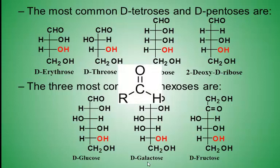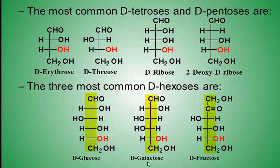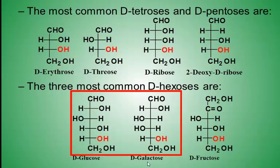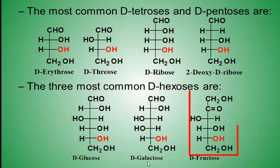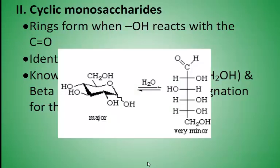I encourage you to draw the Lewis structure for that top group to verify that it is an aldehyde. The bottom three are hexoses, or six-carbon monosaccharides. The first two of the bottom three are aldoses and the third one is a ketose. Monosaccharides are an equilibrium between their straight chain form and a cyclic form — they primarily exist as ring structures.